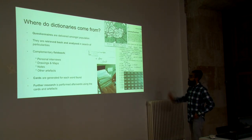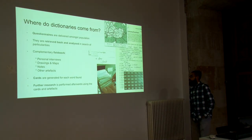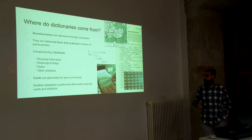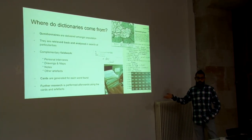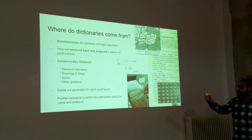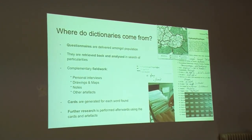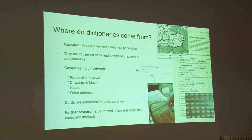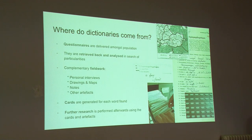Here we have some pictures that summarize the process. First, some questions are created and delivered to the population, who answer questions related to words and their meanings. Then those answers are retrieved and stored in drawers in the shape of paper strips and paper cards, along with notes or even drawings. The researchers can then go through and flip through them in order to get insight and learn more about those words.